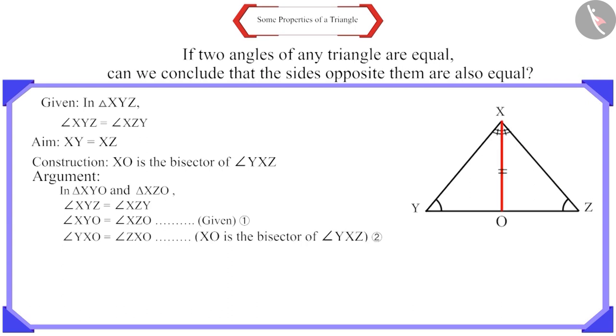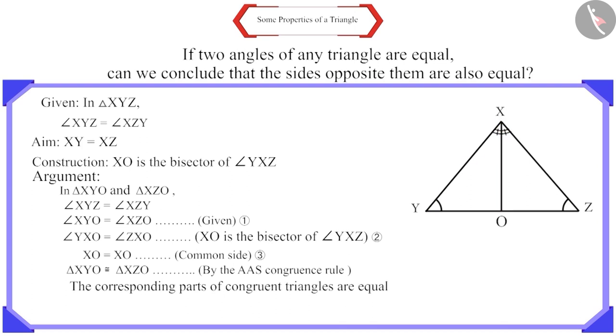And we constructed XO, which is the bisector of angle YXZ. Therefore, angle YXO and angle ZXO will be equal. Side XO is the common side. From equations 1, 2 and 3, we can say that by the AAS congruence rule, these two triangles are congruent. And we know that the corresponding parts of congruent triangles are equal. Therefore, side XY and side XZ are equal.